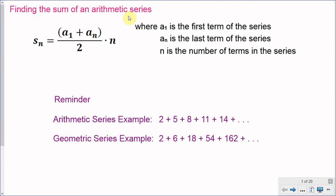We're going to be finding the sum of an arithmetic series in this video. I've already done a video on the sum of a geometric series, so I'll put a link in the description below. To find the sum of an arithmetic series we apply this formula: s of n equals the sum of a of 1 plus a of n, all over 2, times n. Here a of 1 is the first term, a of n is the last term, and n is the number of terms in the series.